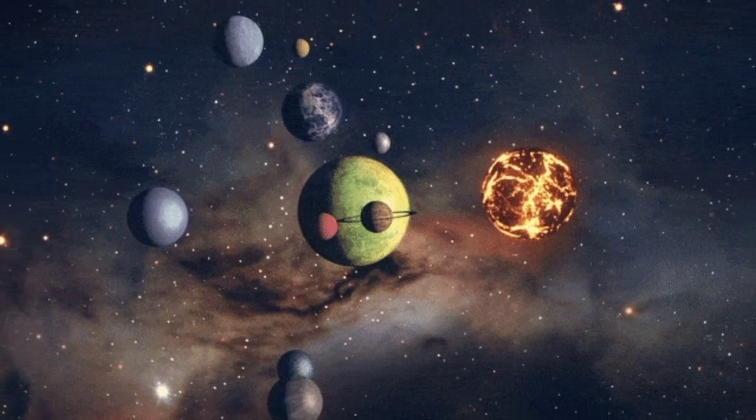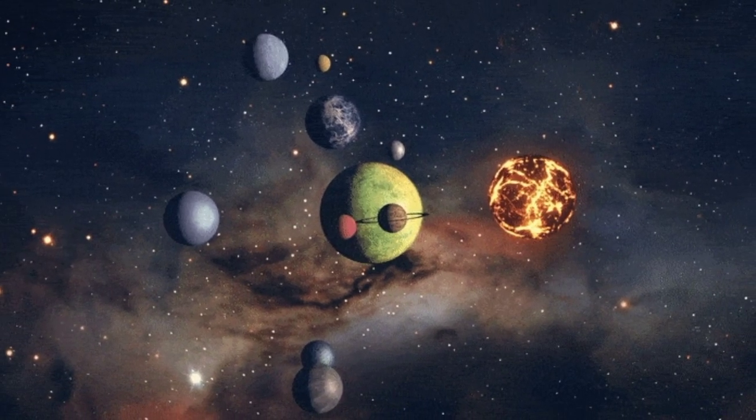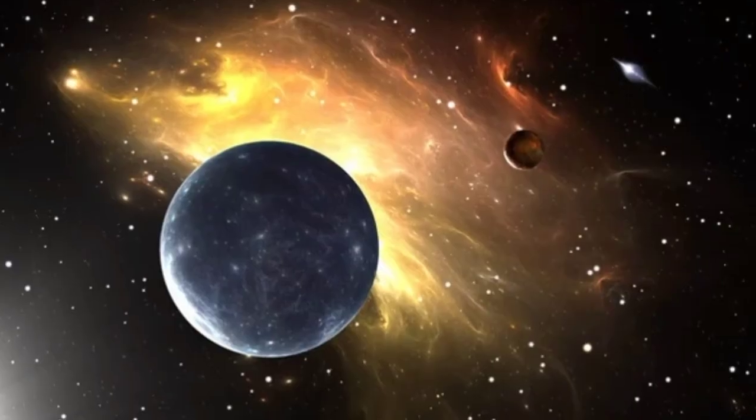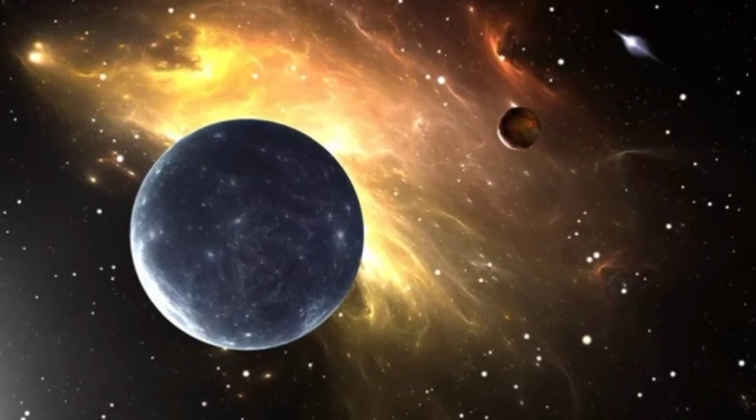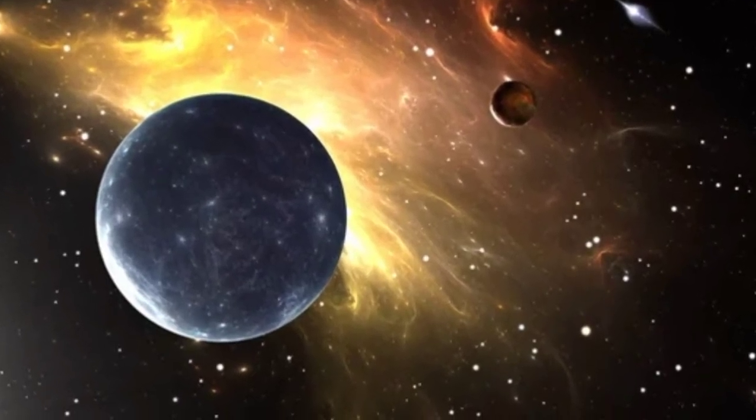Originally spotted by NASA's Kepler Space Telescope in 2017, GJ9827D orbits a red dwarf star 97 light years away in the constellation Pisces.